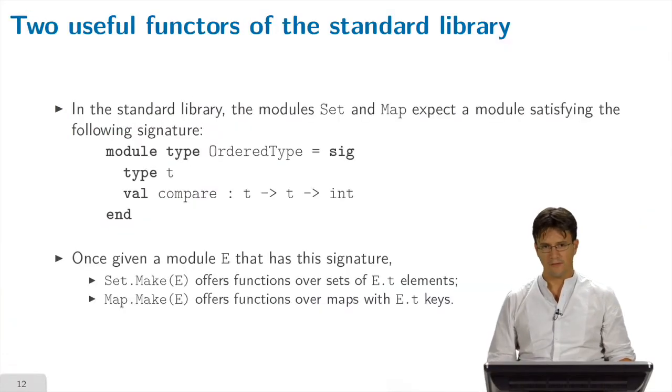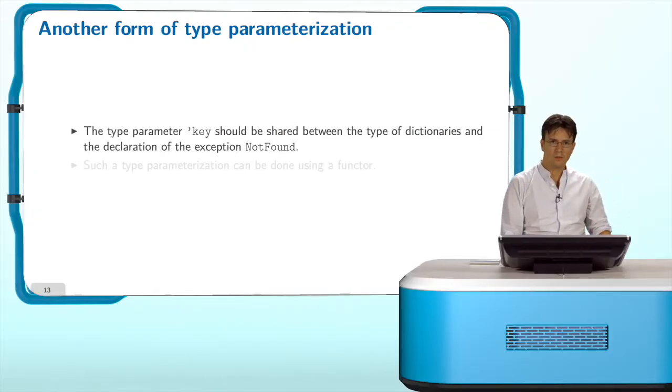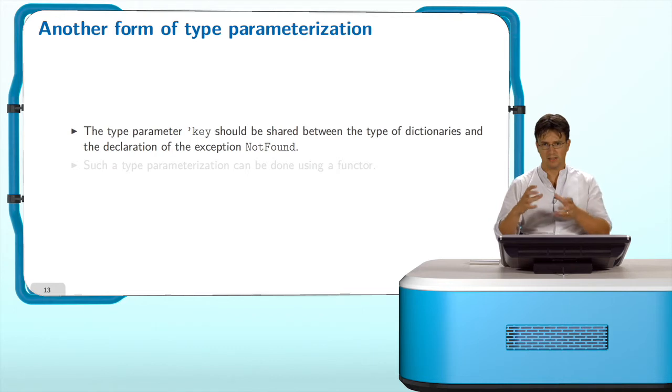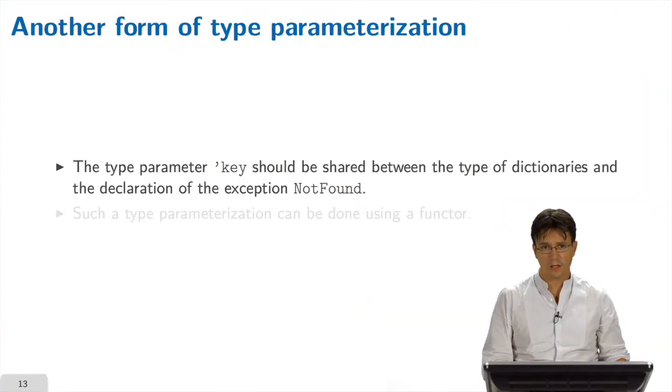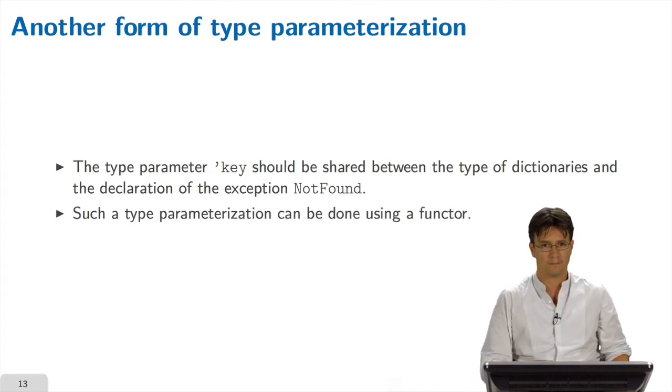If you apply the functor set.make on it, then you will get a very large number of functions that manipulate sets whose elements have type E dot T. Similarly, if you apply map dot make on this module, you will get a large set of functions manipulating maps whose keys are of type E dot T. Remember another remark that we have done about the case study in the last sequence. We have said that it was a pity that the exception not found cannot be adjusted in a way that it carries the key that has not been found.